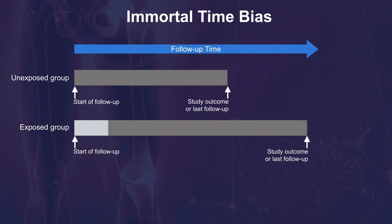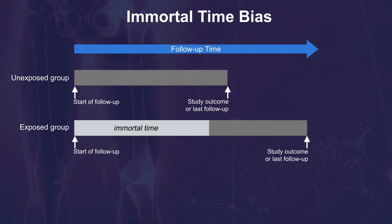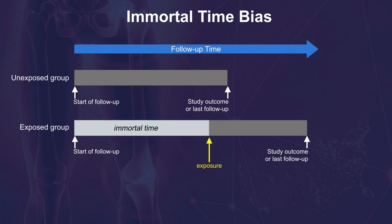For the exposed group, the period of time between the beginning of follow-up and the study outcome or last follow-up is considered immortal time. This is because patients have to survive and be followed long enough to experience the exposure. Also, patients cannot experience the study outcome during this period — any patient that experiences the study outcome prior to the exposure is by definition included in the unexposed group, because at the time of the outcome event, they are still unexposed.